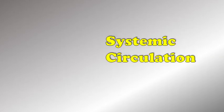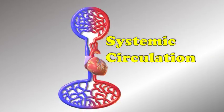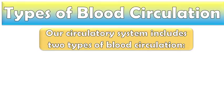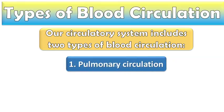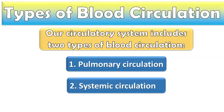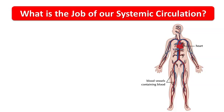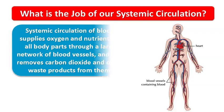Our circulatory system includes two types of blood circulation: pulmonary circulation and systemic circulation. In this video, we will discuss the basic process of systemic circulation.